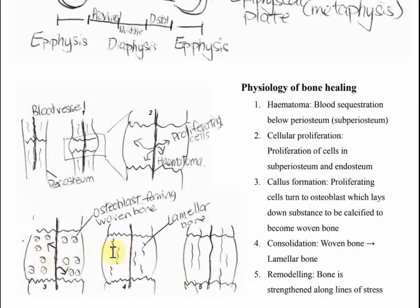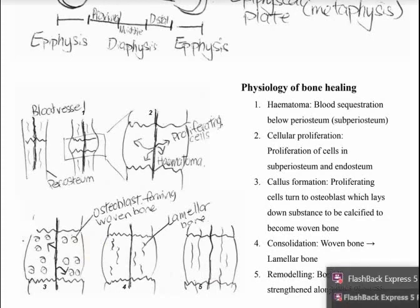So recap bone healing: broken blood vessel, osteoblast leaking out to form callus - initially woven bone, then lamellar bone, and finally you have the remodeled bone.